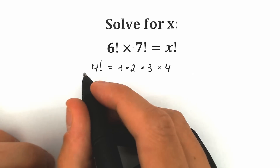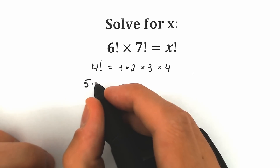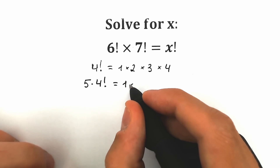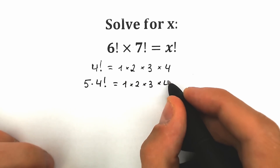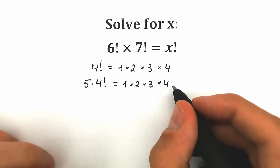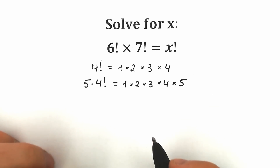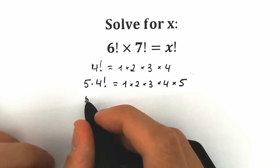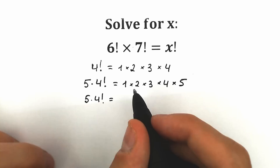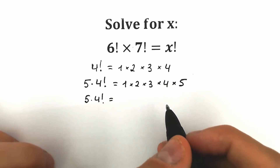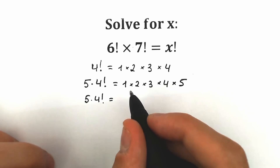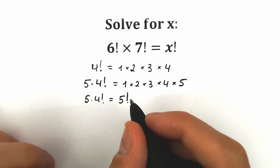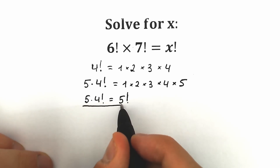When we multiply the left side by 5 we have 5 times 4 factorial. And on the right side we have absolutely the same thing: 1 times 2 times 3 times 4 times 5. On the left side we have 5 times 4 factorial, but on the right side we have a product from 1 to 5, which implies that this is 5 factorial. So this is a really important formula: 5 times 4 factorial equals 5 factorial.